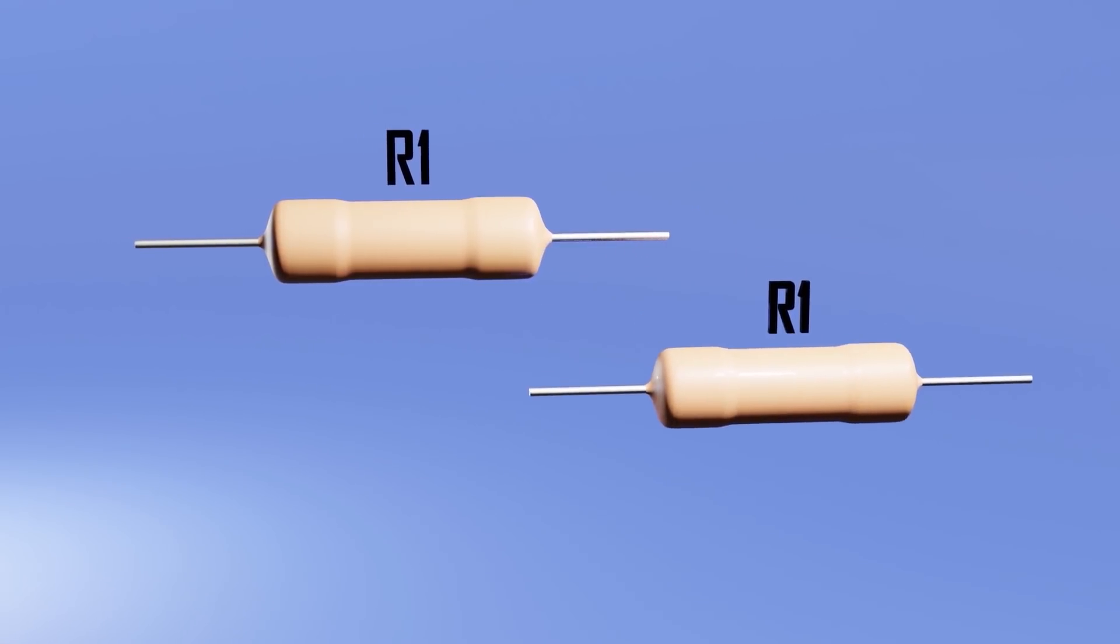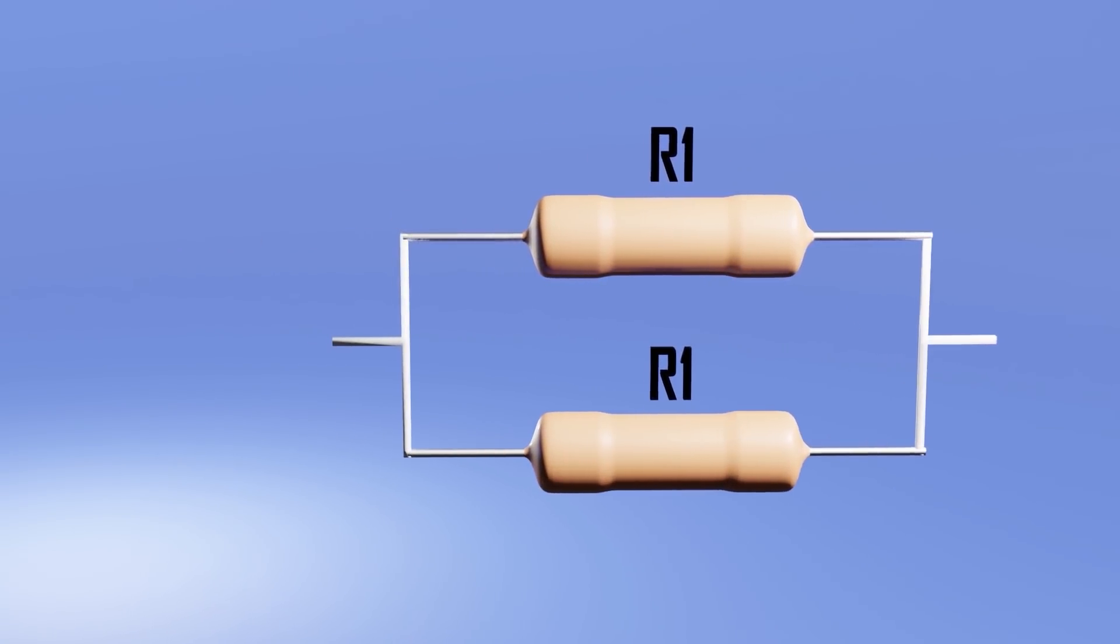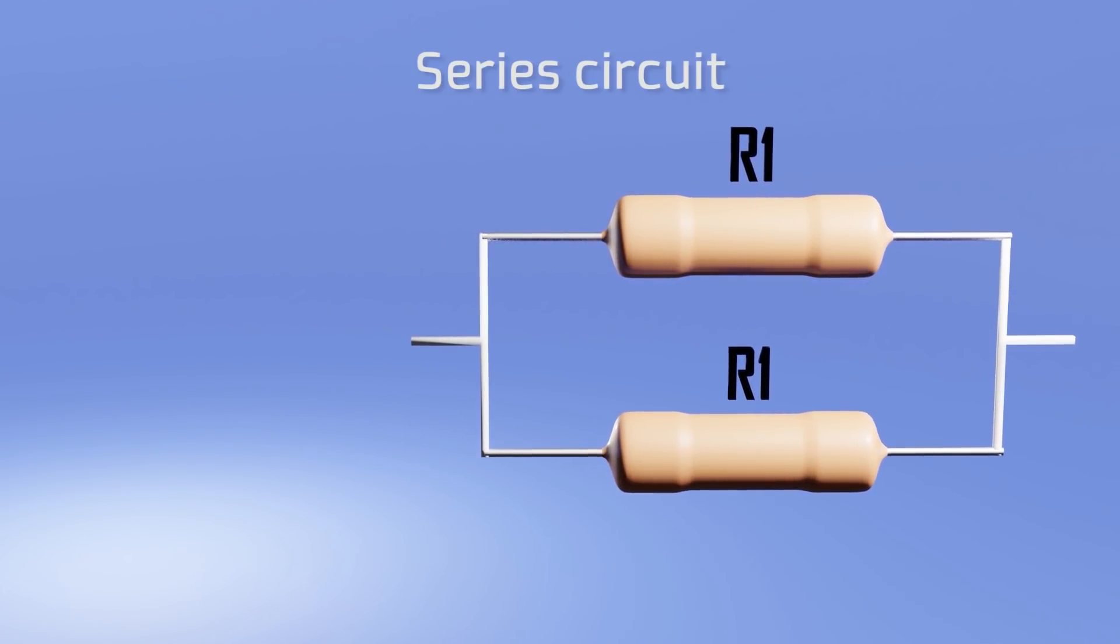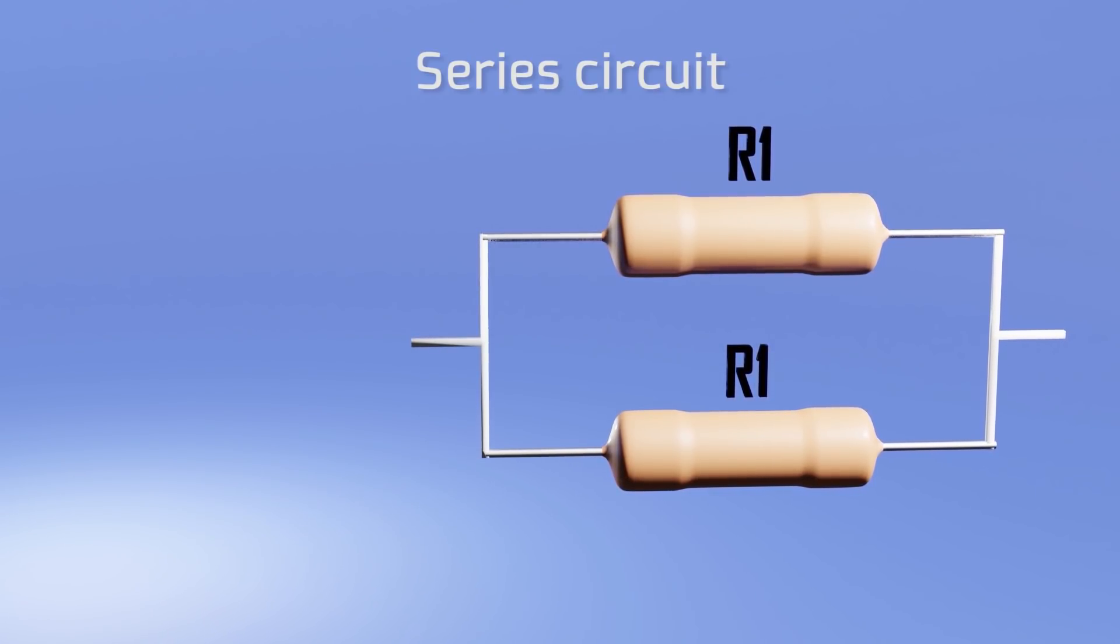On the other hand, if we want to reduce the total resistance of a set of resistances, what we can do is connect them in parallel. If we connect two equal resistances in parallel and think again in the formula, we will realize that what we are doing now is simply multiplying the cross sectional area by two. That is, we are going to have half the resistance.